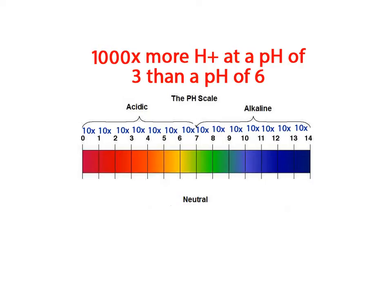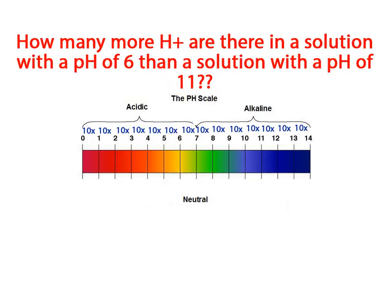Now you try. How many more hydrogen ions are there in a solution with a pH of 6 than a solution with a pH of 11?